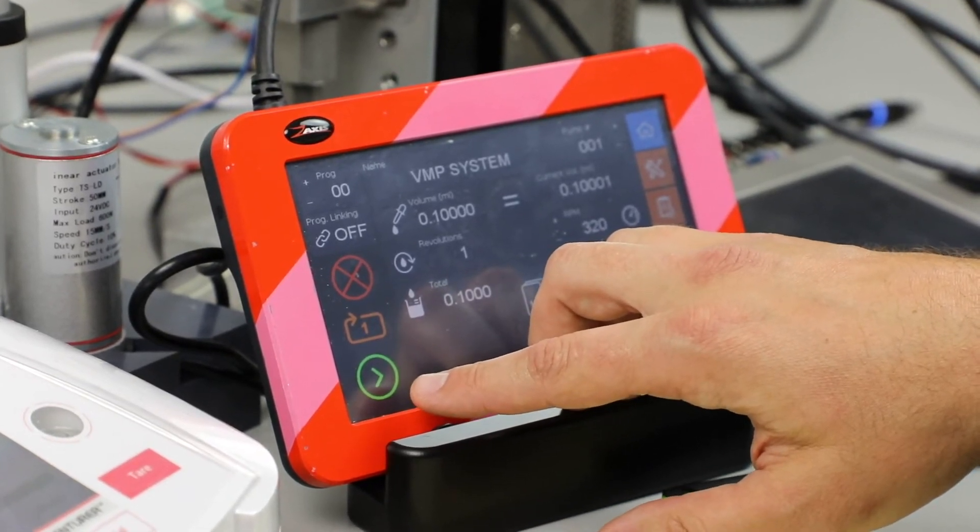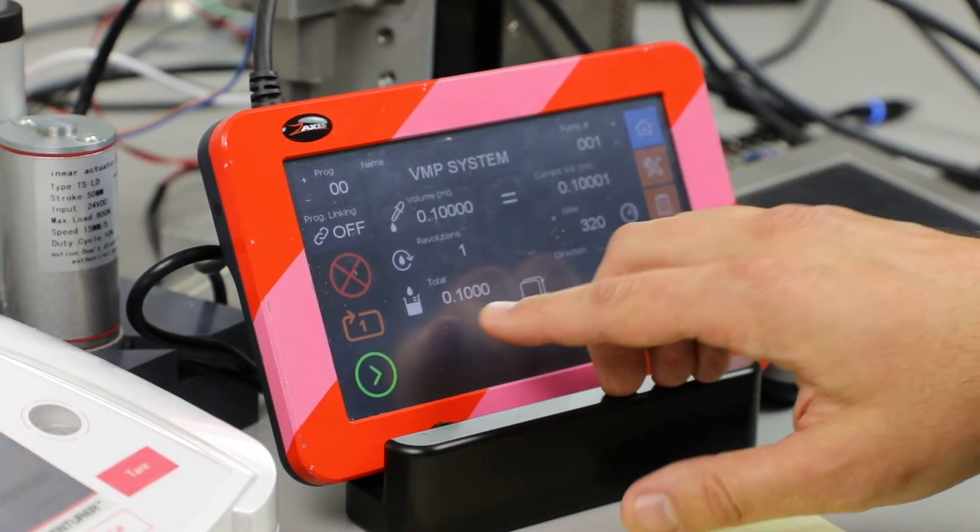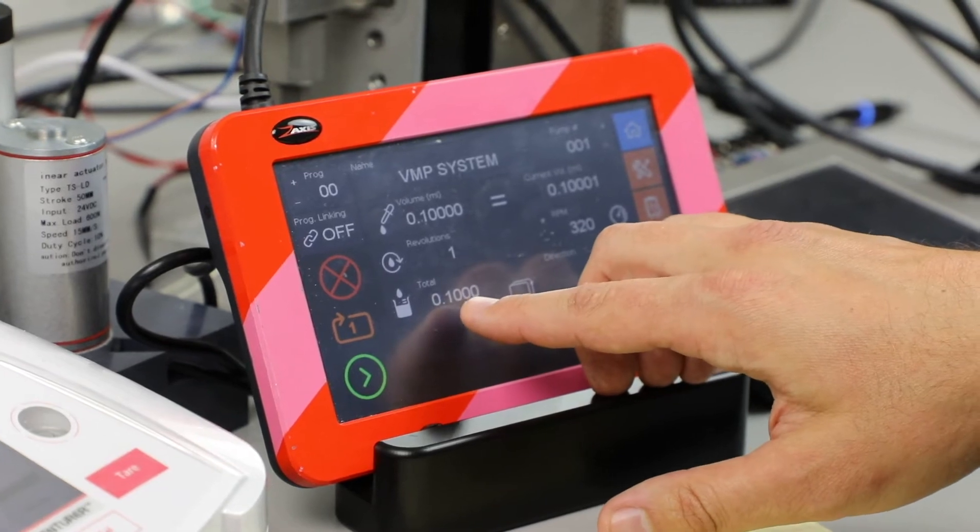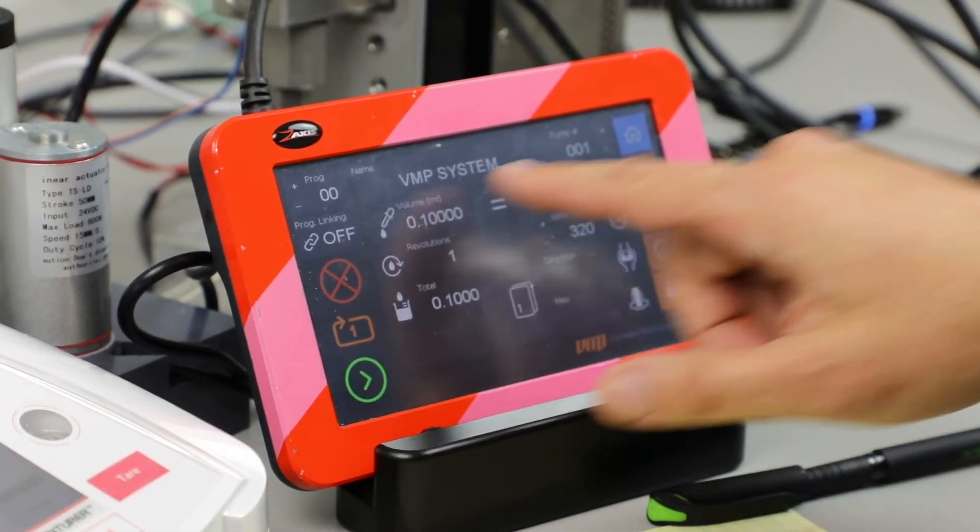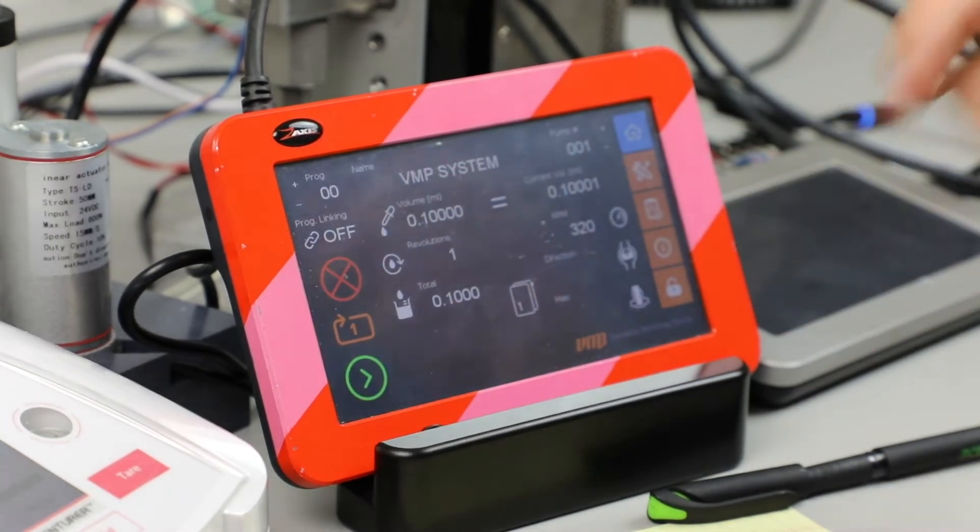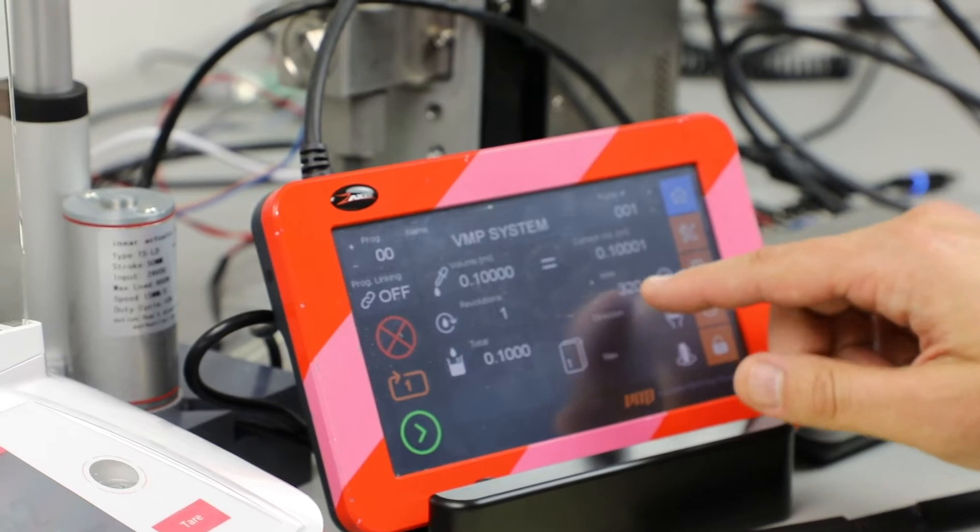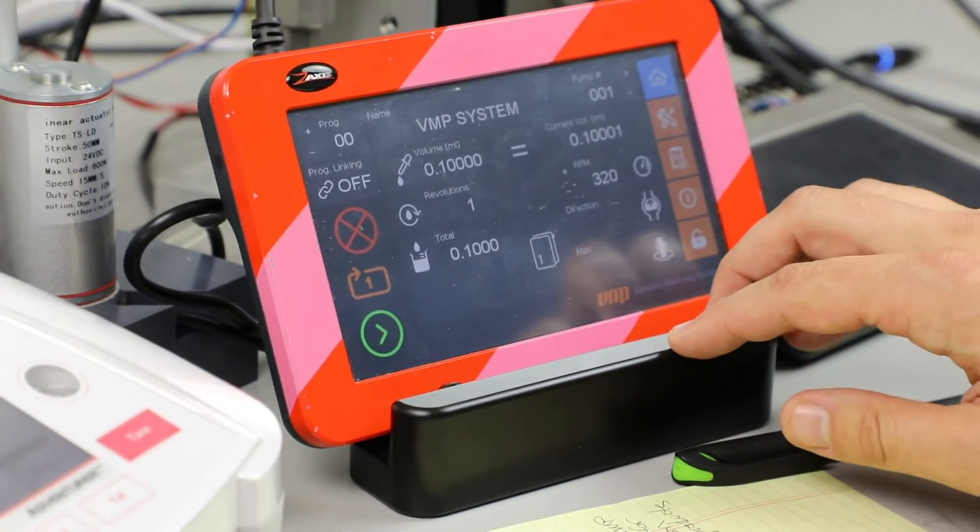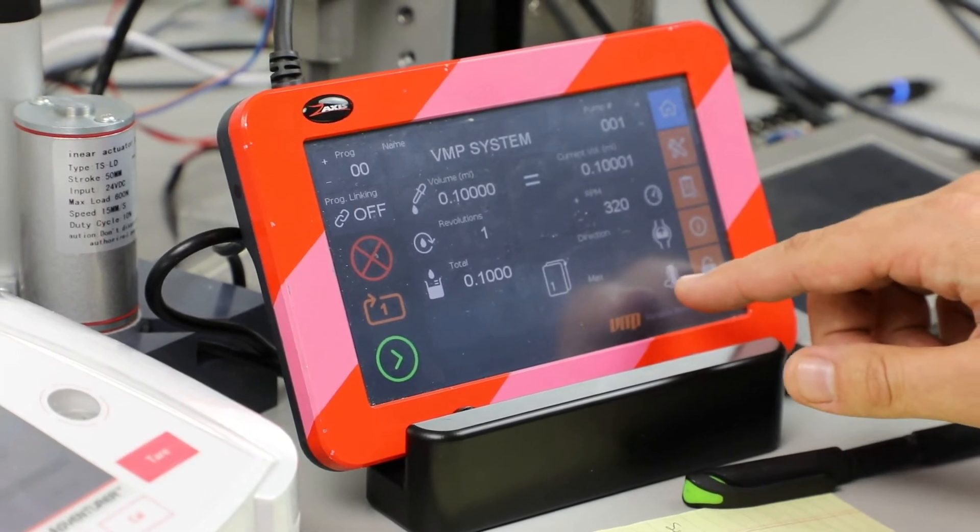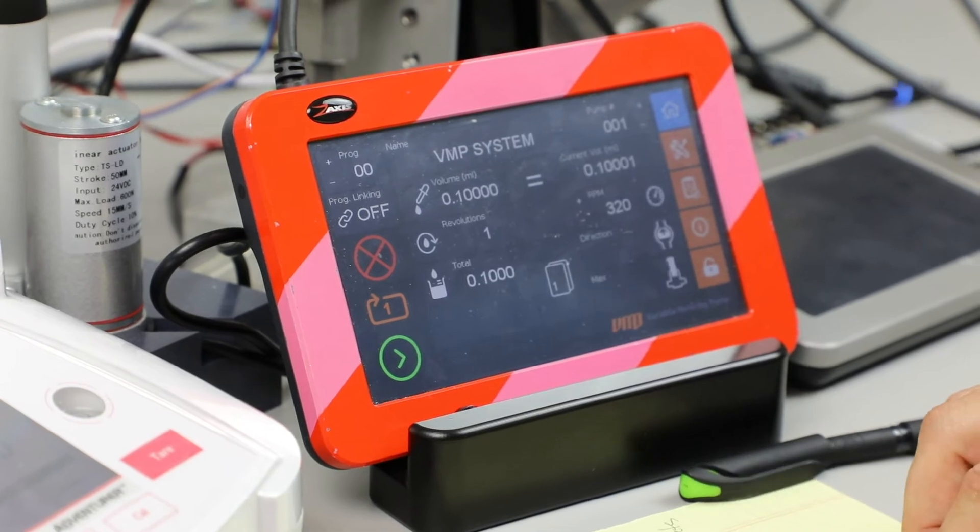I can also, a combination of the pump volume and the revolutions of the pump gives us a totalizer for volume. We can see if we're linking to programs, meaning we can link several programs together. We can vary our RPM, which is the rotational speed or flow rate of the pump. We can change pump direction, and we can quickly go out to our maximum stroke.